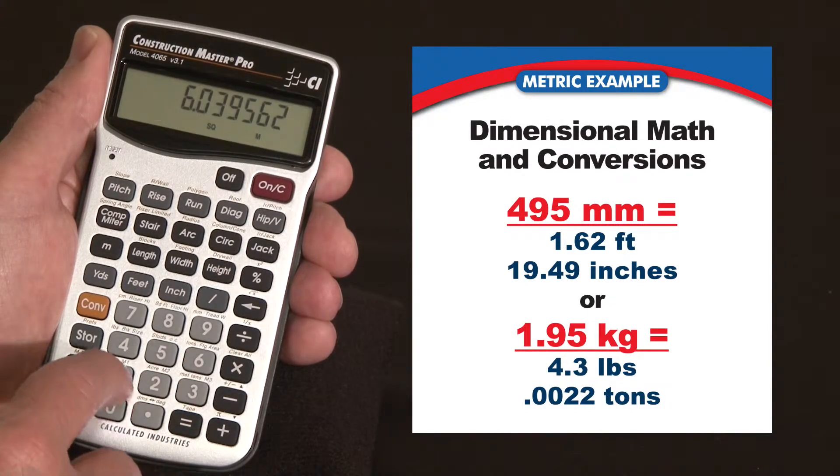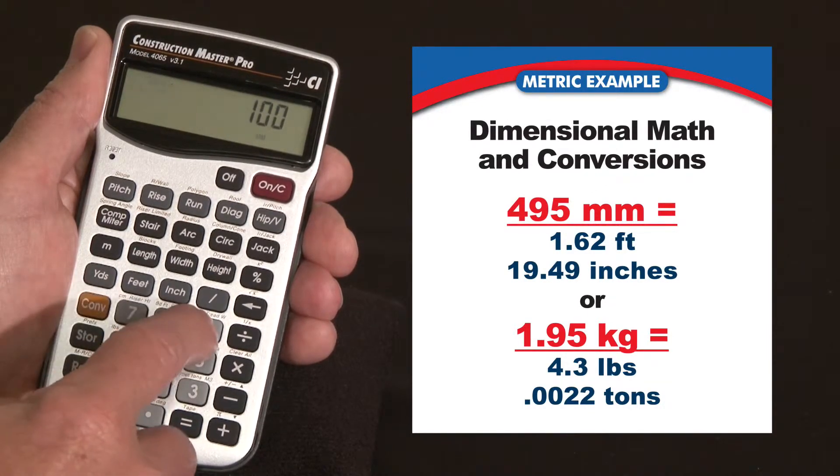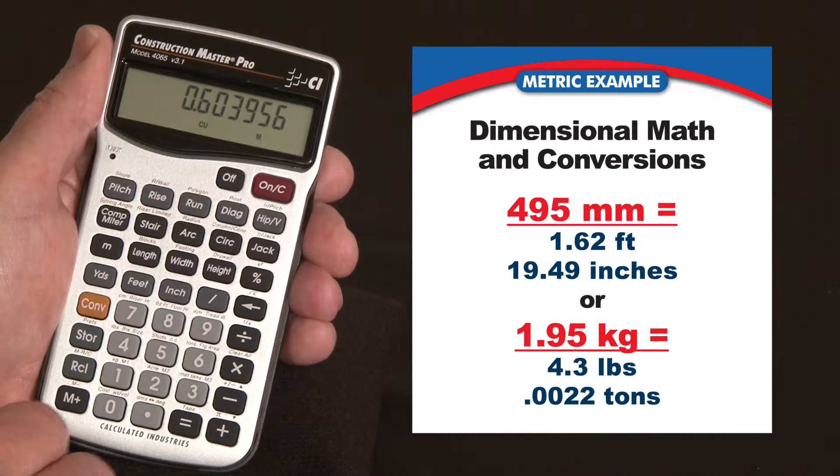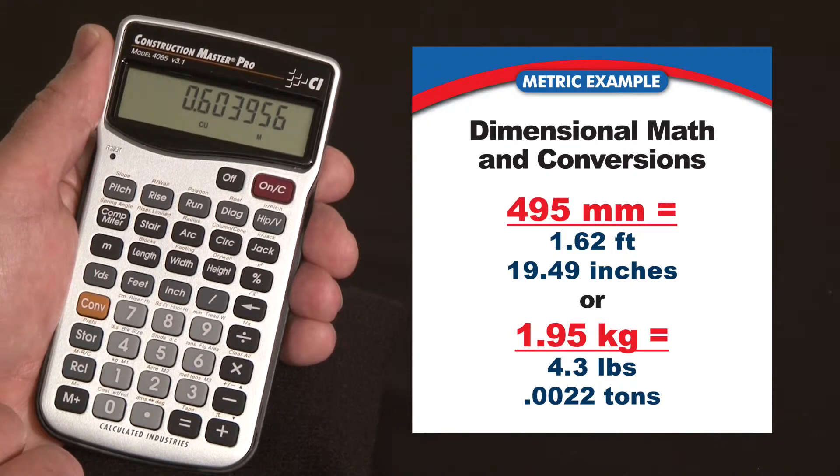You can multiply it by a depth. Let's say 100, convert 9, that's millimeters meters, equals 0.6 cubic meters. So you can do all sorts of manipulations and maths with those values.